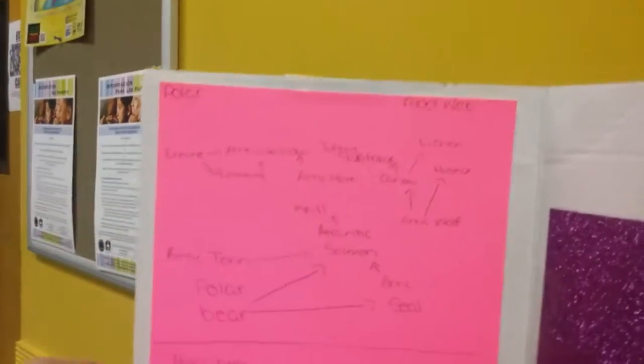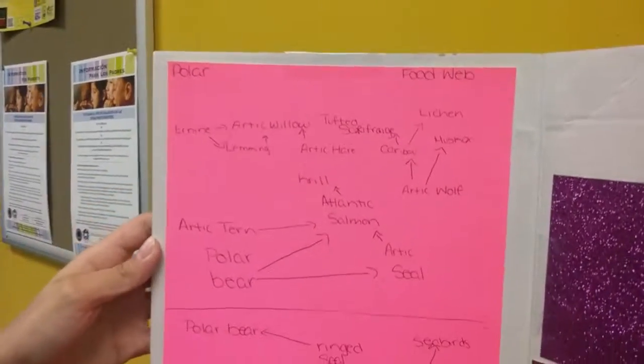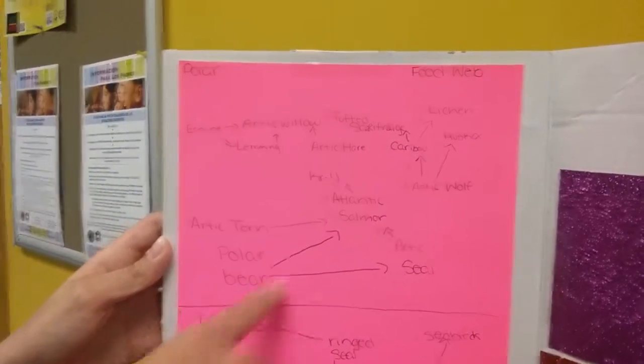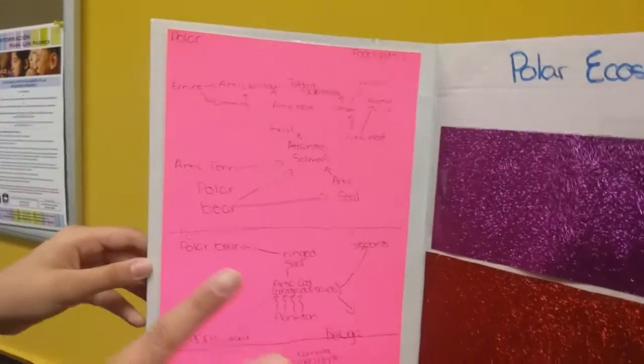So I did one food web, then I did another food web. Yeah, describe what's happening in the food web. Okay, well, you could give the overview. You've got two food webs? Yeah, I have three.